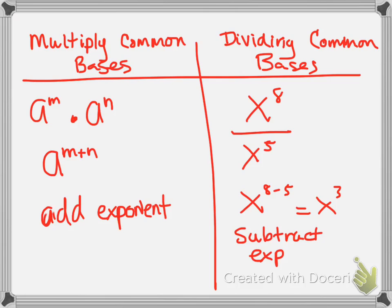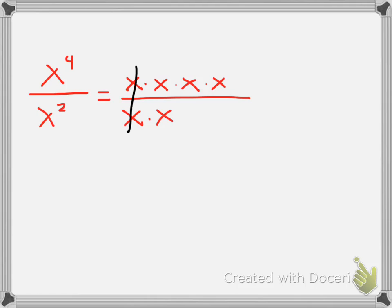So let's talk about that. If I have something like x to the 4th over x squared, let's expand this out and really talk about what's happening. If I expanded this, this would mean x times x times x times x. And if I have the bottom one, I have x times x. What if I divide out common factors? How many common factors can we divide out? Two. So if I'm dividing them out, when I cross cancel, what am I left with? When I cross that out, what's left there when I cross out that x? One.